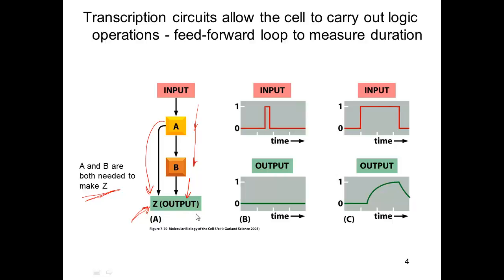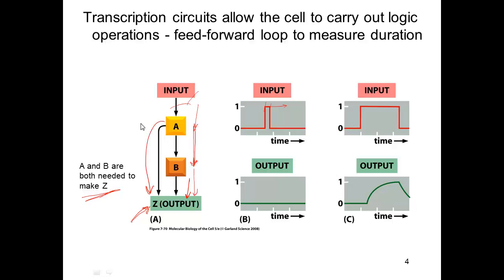Imagine protein Z is a toxic molecule with disastrous effects that you only want active for a certain time. Consider a spurious input where you make protein A for a very short amount of time, but since it's spurious, it doesn't persist. Protein A will make some protein B, but the input is off, so you stop making A. It takes time to make protein B, and by the time B is produced, A is already gone — so you won't have both A and B present to make gene product Z.